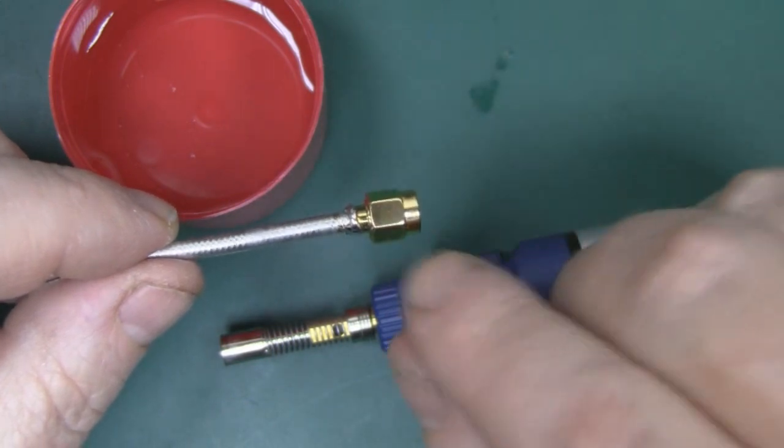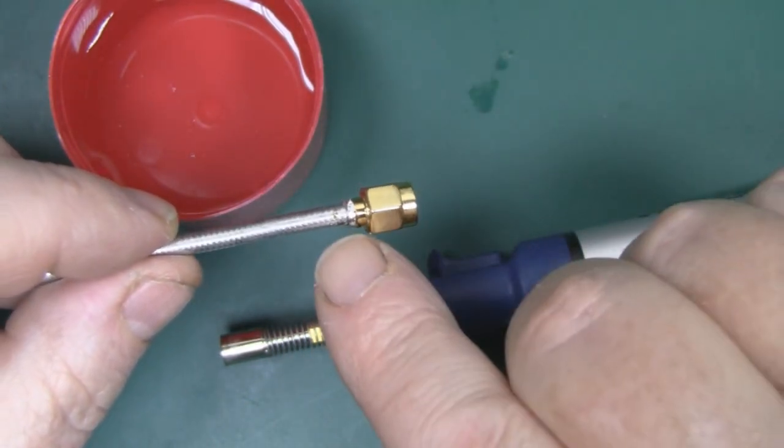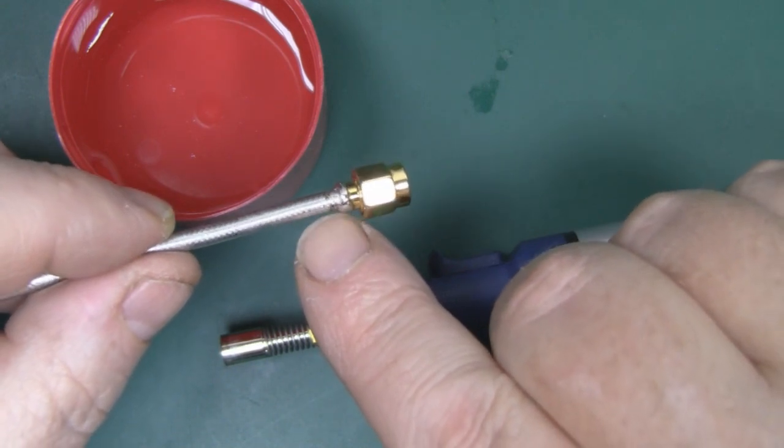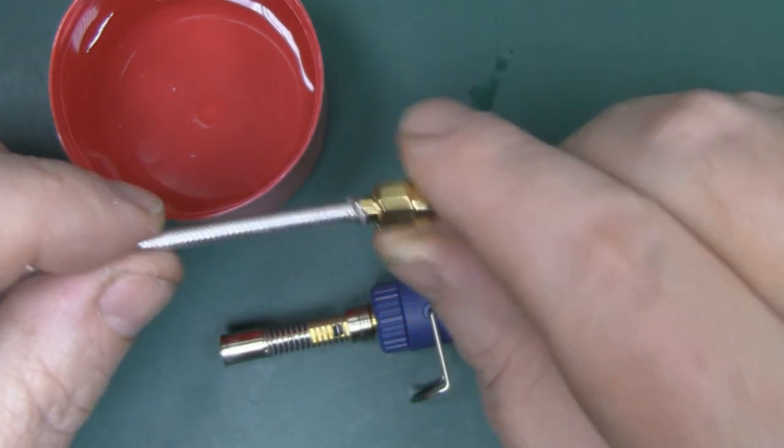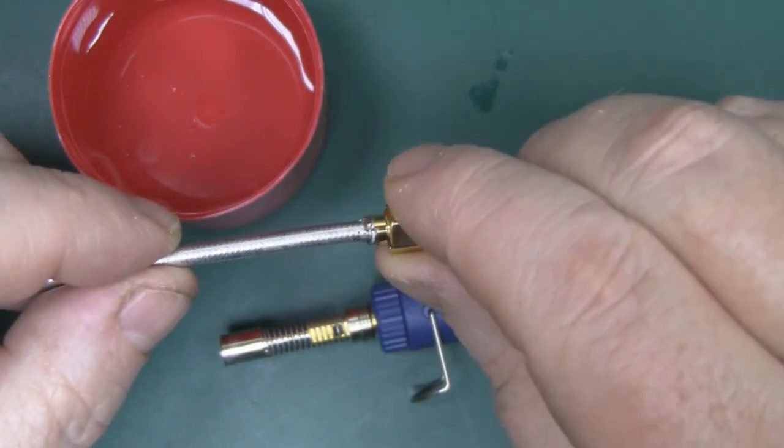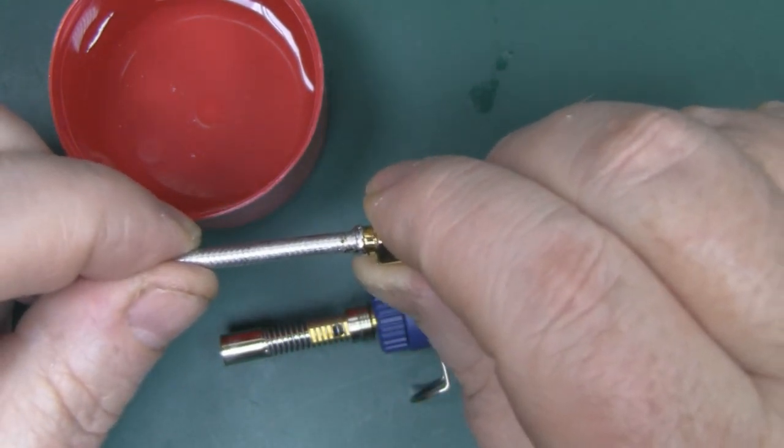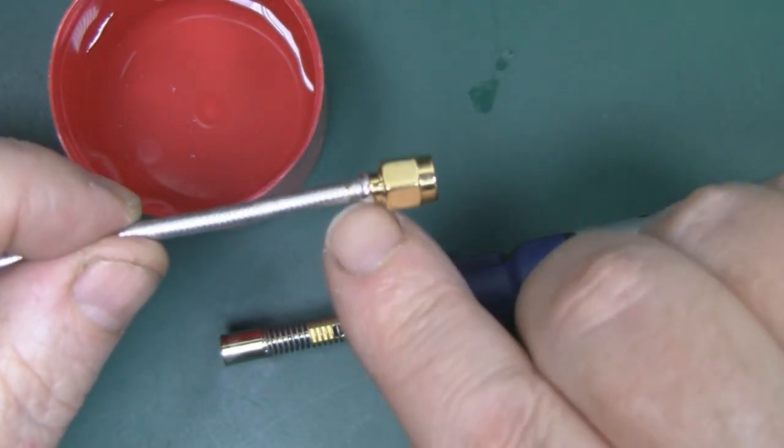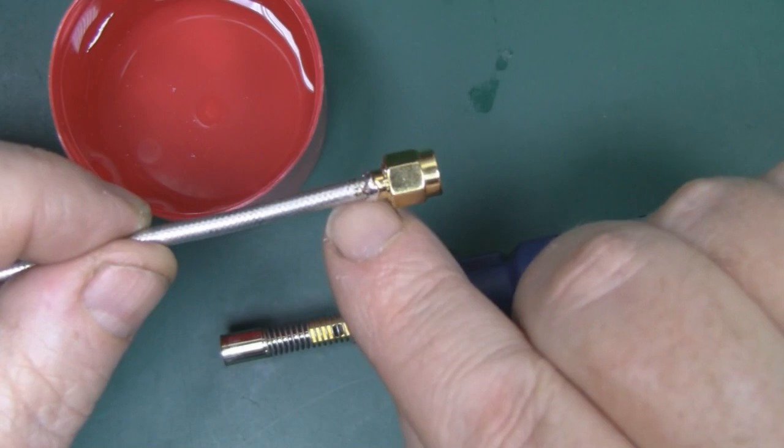At this stage what I've done with the soldering iron is just get some solder in there around the coax and the SMA connector. It's not really a good enough job to actually solder the SMA connector and coax together. To be honest, if I really pulled this I would probably be able to pull it apart.